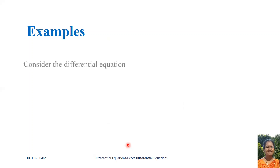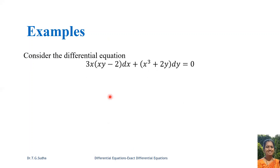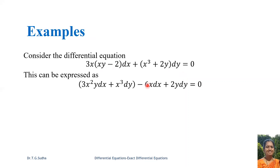Let us begin with the examples. Consider the differential equation 3x(xy minus 2)dx plus (x³ plus 2y)dy equal to 0. Now, we can express this equation as 3x²y dx — from the first term we get 3x²y dx — plus x³ dy, minus 6x dx, and plus 2y dy equal to 0.